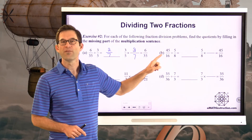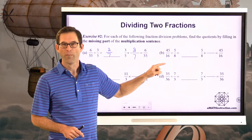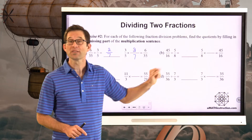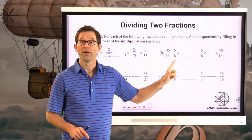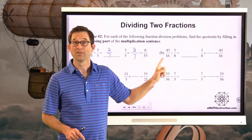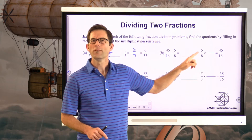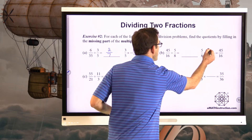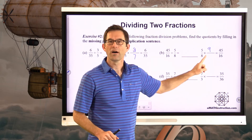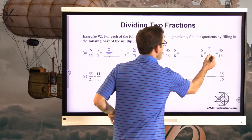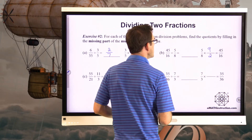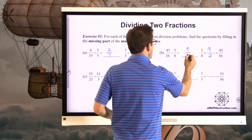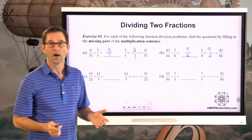In letter B, we have 45 sixteenths divided by five-eighths. Whatever that's equal to must be what we need to multiply five-eighths by to get 45 sixteenths. Five times 9 would be 45, and 8 times 2 would be 16. So 45 sixteenths divided by five-eighths must be nine-halves.